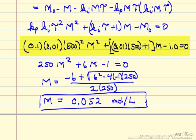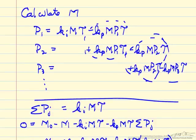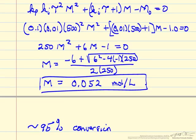Substituting in the rate constants and residence time, we simplify the quadratic and determine the exit concentration. We came in with one mole per liter; the exit concentration in the CSTR is 0.05 moles per liter — approximately 95 percent conversion of the monomer in the reactor. That's only the first step, because now we want to get actual concentrations of the polymer units, and we'll use a spreadsheet to calculate weight fractions, number fractions, and the distributions.